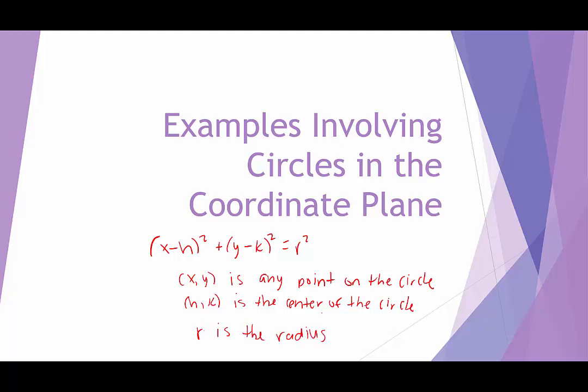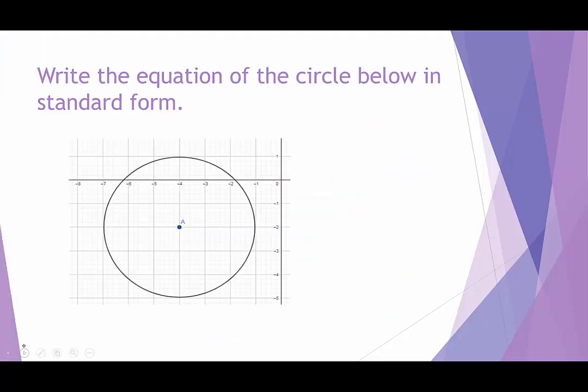Those are the things we really want to deal with. We need to know two pieces of information — the center of the circle and the radius — in order to write these equations in standard form. So first, we're given a graph of a circle, and we want to write the equation in standard form. We need to identify the center and the radius.